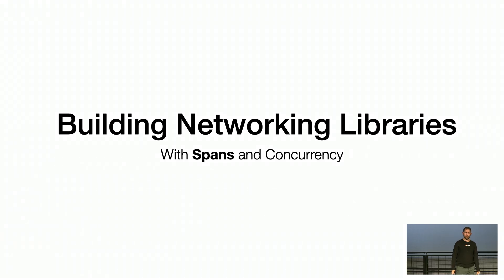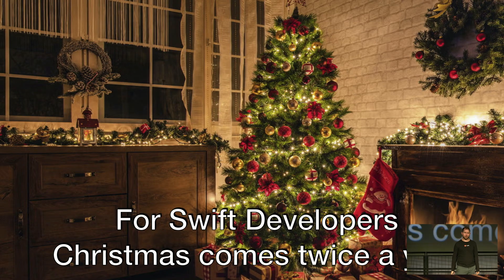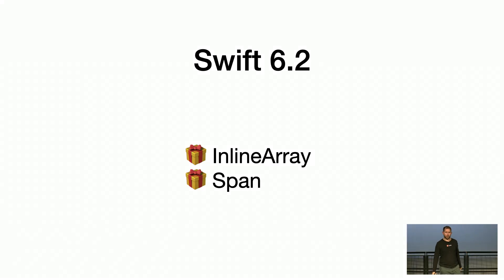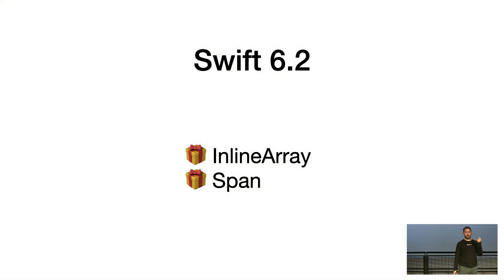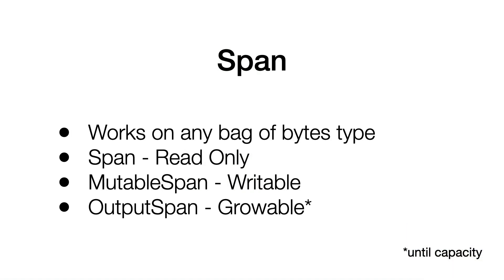Building networking libraries with Span and concurrency. For those who do Swift and have been for a while, you know that Christmas comes twice a year — once when Swift 6.2 comes out and the next 6.3 half a year later, so every half year we have another Christmas. This year we had two really important types that are really, really cool, and I know Ben talked about them earlier today: inline arrays and Span.